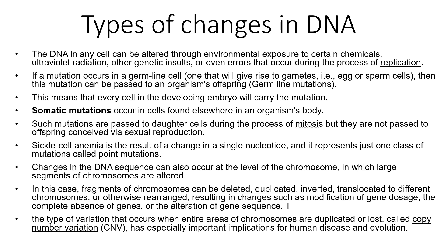DNA in any cell can be altered through environmental exposure to various chemicals such as ultraviolet radiation or any mutagenic agent during replication. As mentioned, we can have germline mutations, found in the developing embryo, or somatic mutations, found elsewhere in the organs of the body.